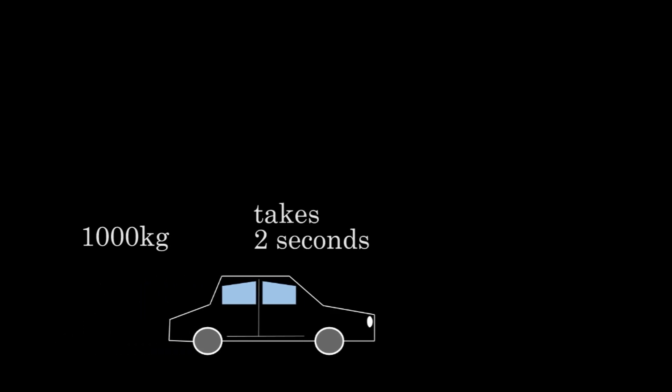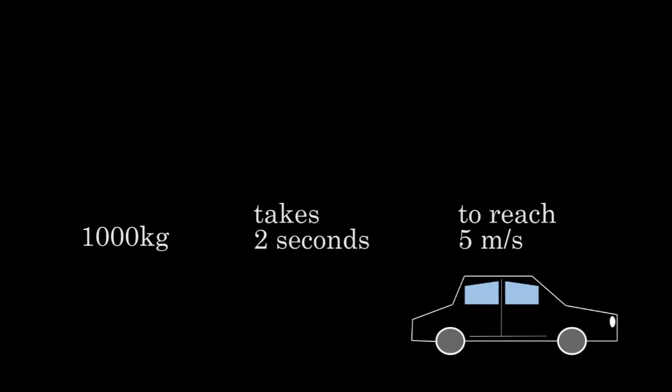Alright, let's look at another example. Let's say a 1,000 kilogram car starts from rest and takes 2 seconds to reach a speed of 5 meters per second. We can find the power output by the engine by taking the work done on the car divided by the time it took to do that work.